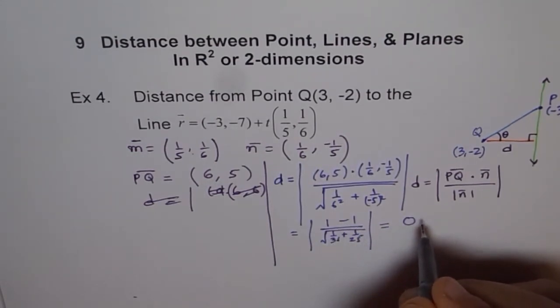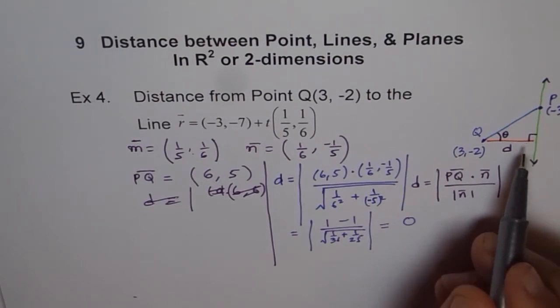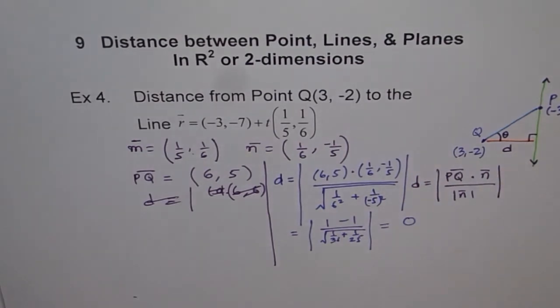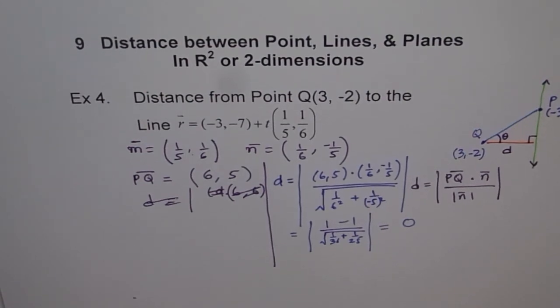It seems that the point is on the line. Do you understand? The point lies on the line, and we get a distance of zero. So that's interesting—a point given to you may be on the line. That's how we do it. Thank you.